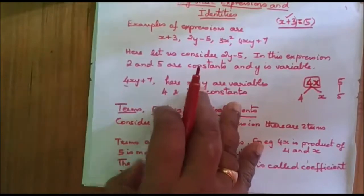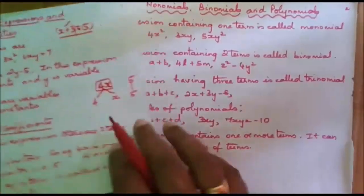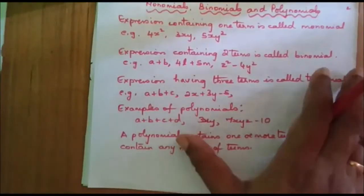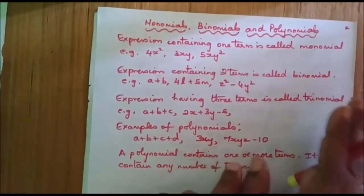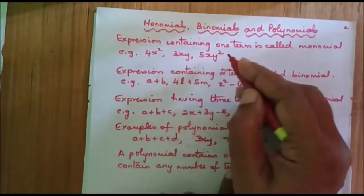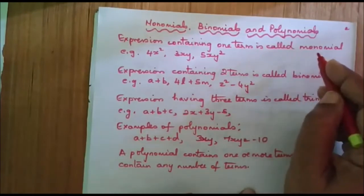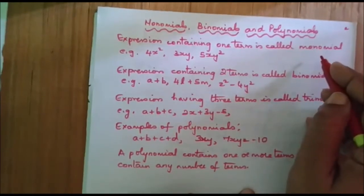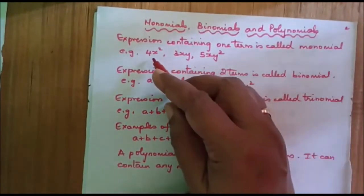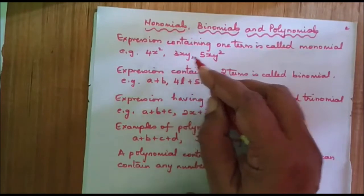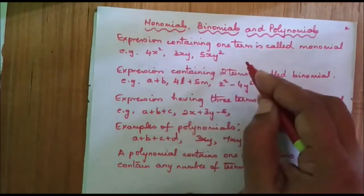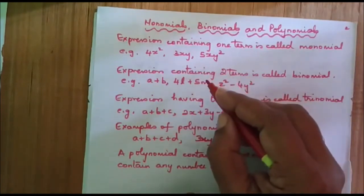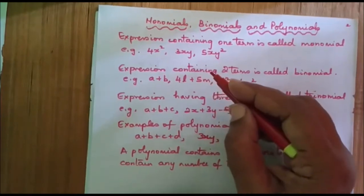Now let us go to the next topic: monomials, binomials, and polynomials. When an expression contains one term, it is called a monomial. Examples: 4x squared, 3xy, 5xy squared — all these are examples of monomials.